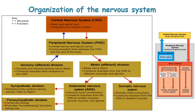When we look at the organization of the nervous system, this diagram helps us break down the central nervous system and the peripheral nervous system together with their components. The CNS comprises the brain and the spinal cord and serves as the major integrative and control centers. The PNS comprises the cranial nerves and the spinal nerves and acts as a communication line between the CNS and the rest of the body. The PNS has a sensory division, which conducts impulses from the receptors to the central nervous system, and this sensory division involves the somatic and visceral sensory nerve fibers.